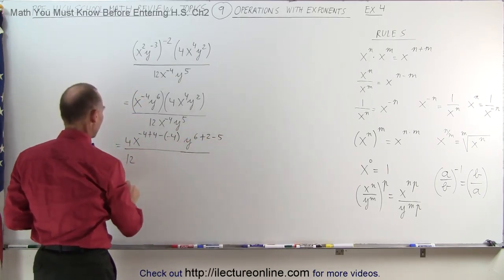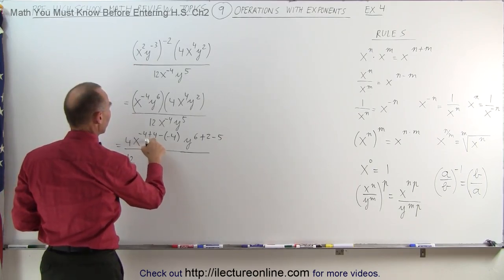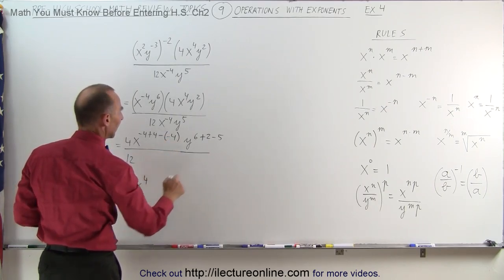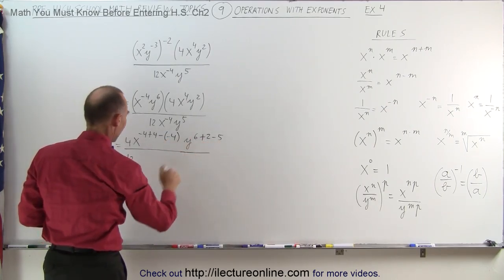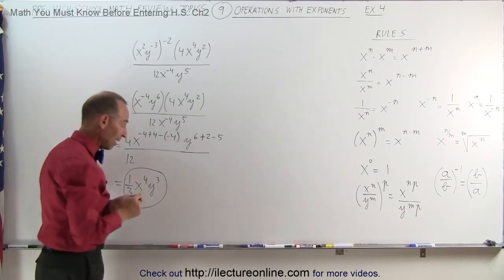Simplifying this, 4 divided by 12 is 1/3. x⁻⁴⁺⁴ cancels out. Minus times minus is plus, giving x⁴. And y⁸⁻⁵ is y³. This is the simplified form of the original problem.